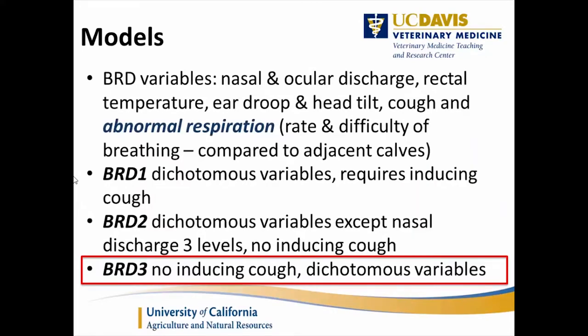The BRD variables finally selected in the model were nasal and ocular discharge, rectal temperature, ear and head positioning — whether there's a tilt or an ear droop — and cough and abnormal respiration. For abnormal respiration, it wasn't a specific cutoff for tachypnea or dyspnea, but rather compared to adjacent calves at that time of day during enrollment. If a calf seemed to have a higher breathing rate or more dyspnea than neighboring calves, that would be a positive for abnormal respiration.